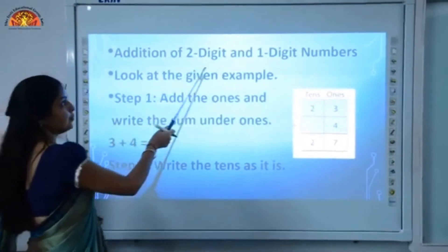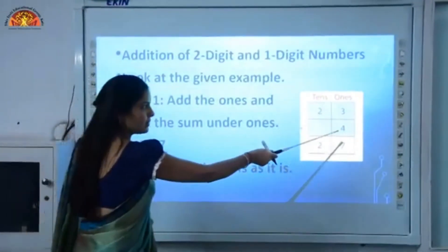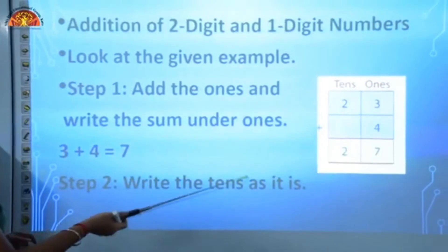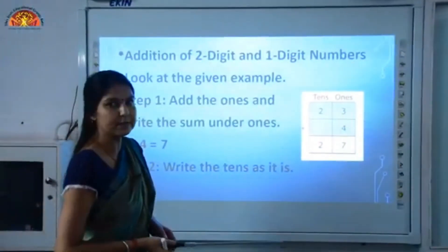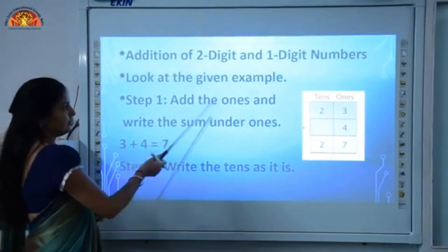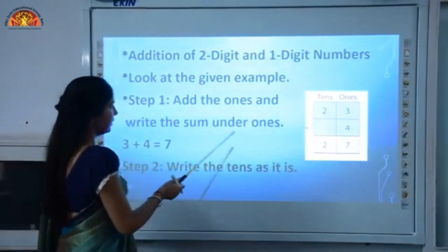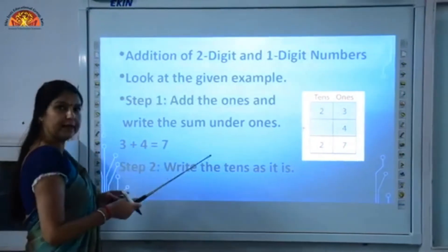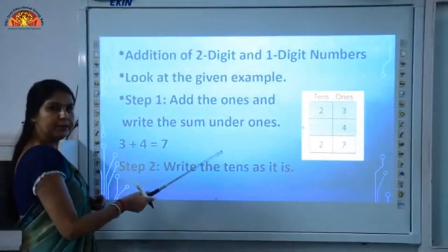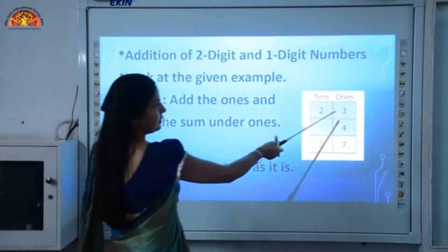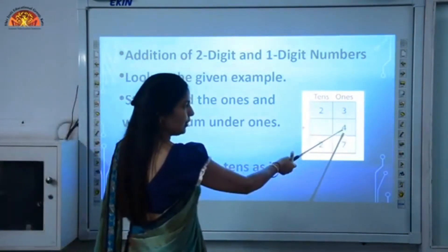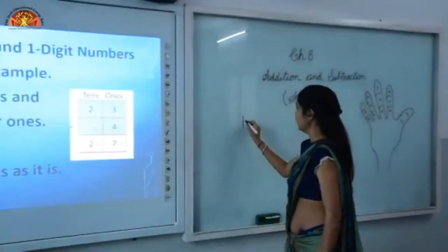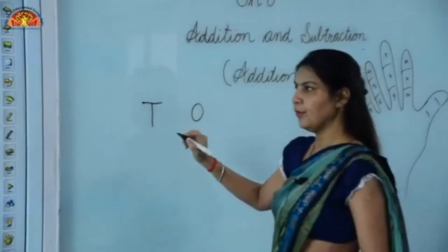Now we will see addition of a two-digit and a one-digit number. You can see there are two digits in one number and only one digit in the other. Look at the given example. We have to follow some steps to solve this question. Step one: add the ones and write the sum under the ones. Sum means addition. T denotes tens and O denotes ones.